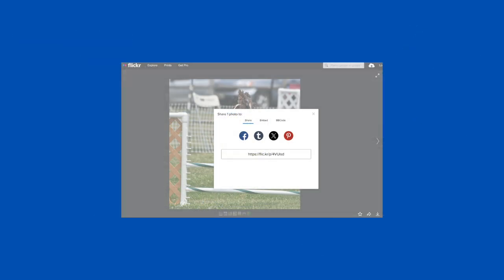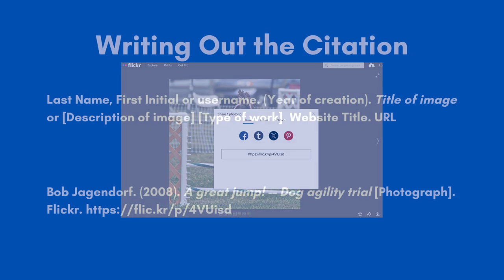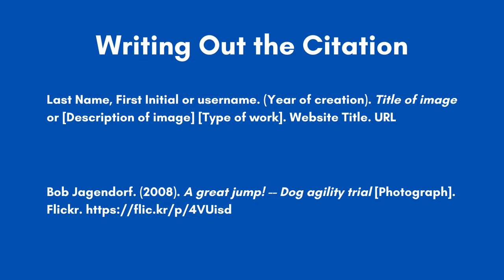And the URL is found by clicking on the arrow towards the bottom. When you click on the arrow, it will open a box like this. Now that we have all of our information, we can write our citation.